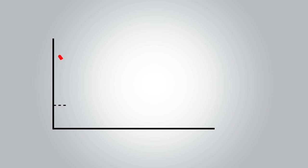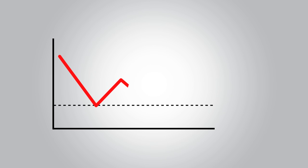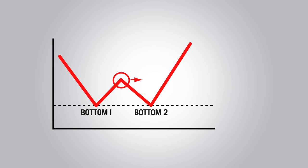A double bottom is a chart pattern used for technical analysis that depicts the drop of a currency price, a rise, and then another drop to the same level before rising again. The double bottom usually indicates a trend reversal in a down-trending market. The chart shows a double bottom where the price level hit two bottoms with a rise in between.